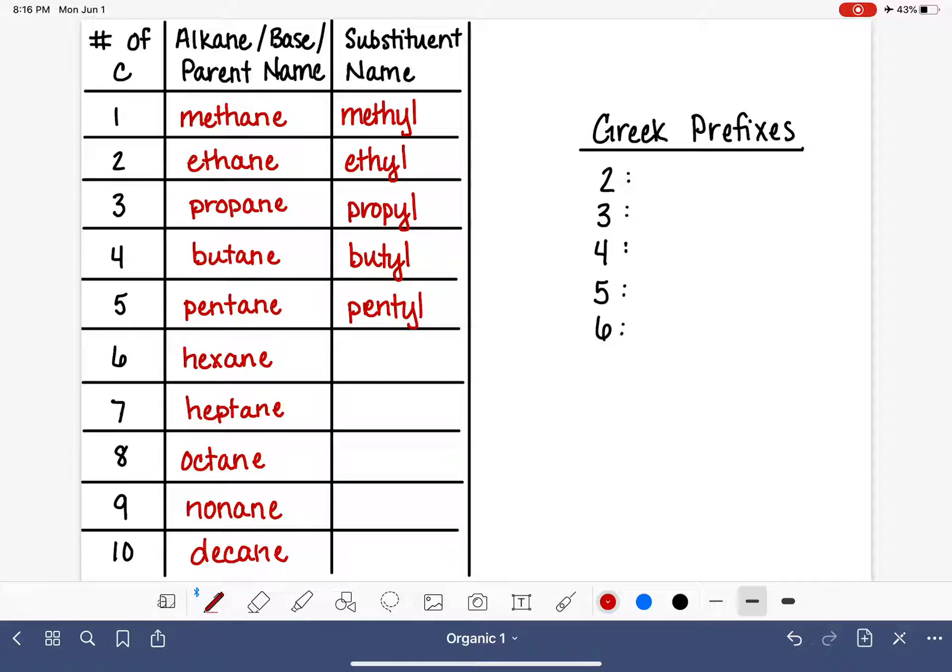Pentane becomes pentyl. Six carbons is hexyl. Seven is heptyl. Eight is octyl. Nine is nonyl. And ten is decyl.